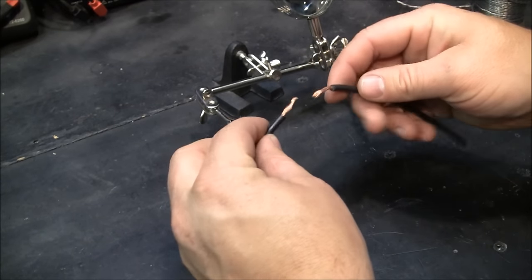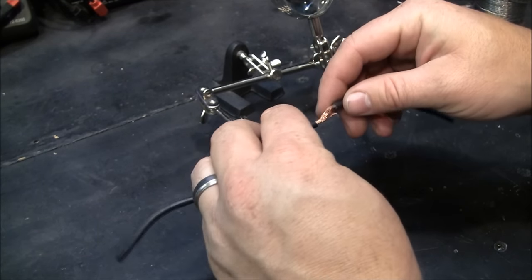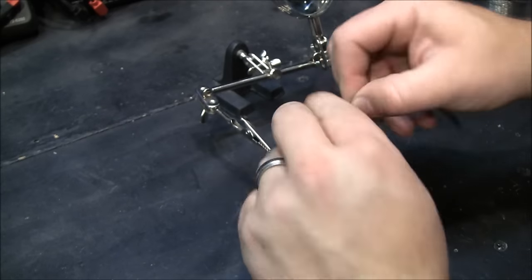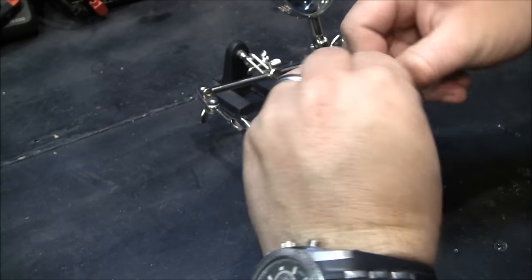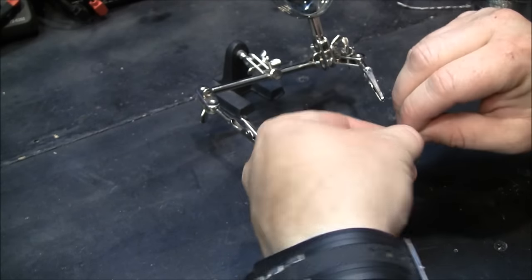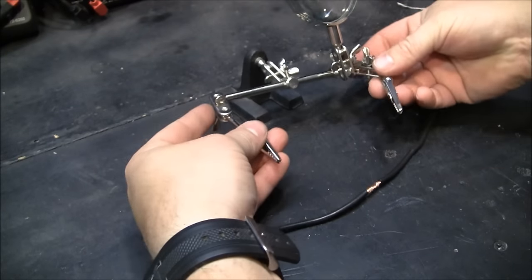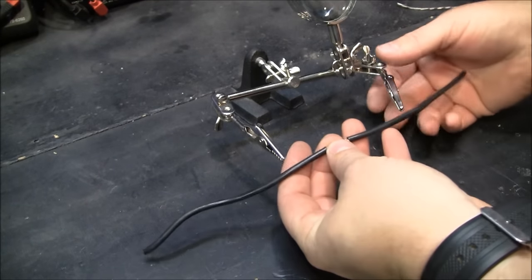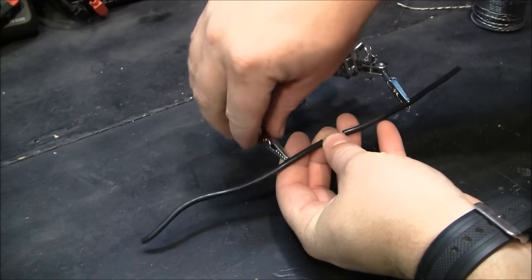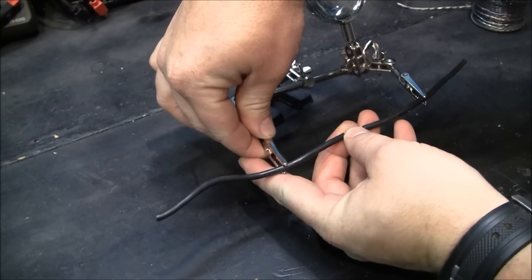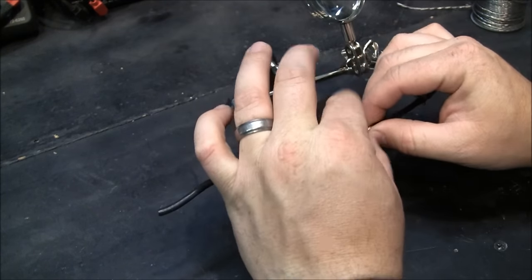So if you're going to solder a couple of wires together, the most common method is to twist the wires together. And then if you have something like a helping hand, that is very helpful.